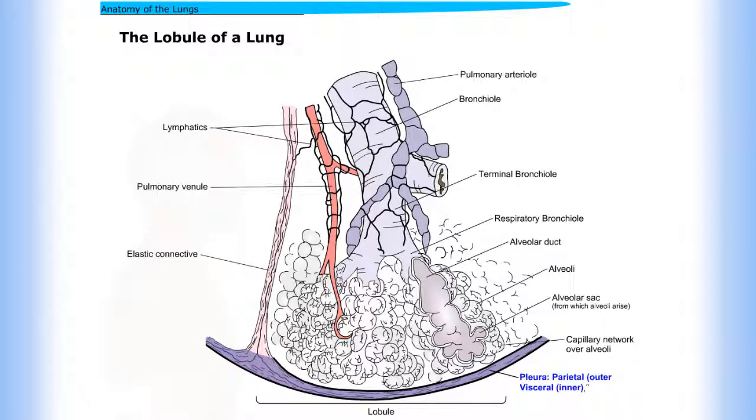Pleura: parietal outer and visceral inner, lymphatics, pulmonary venule, elastic connective tissue.